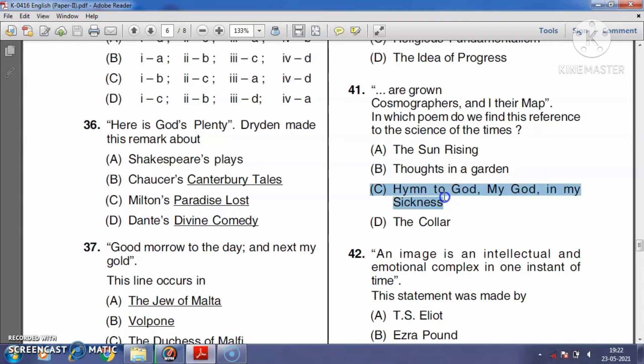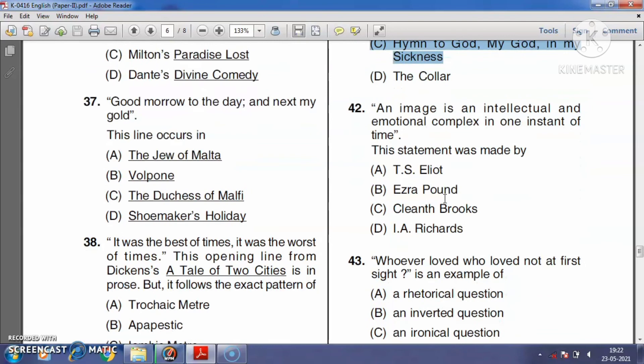Question number forty-two: 'An image is an intellectual and emotional complex in an instant of time.' This statement was made by T.S. Eliot, Ezra Pound, Rupert Brooke, or I.A. Richards? The right answer is Ezra Pound.